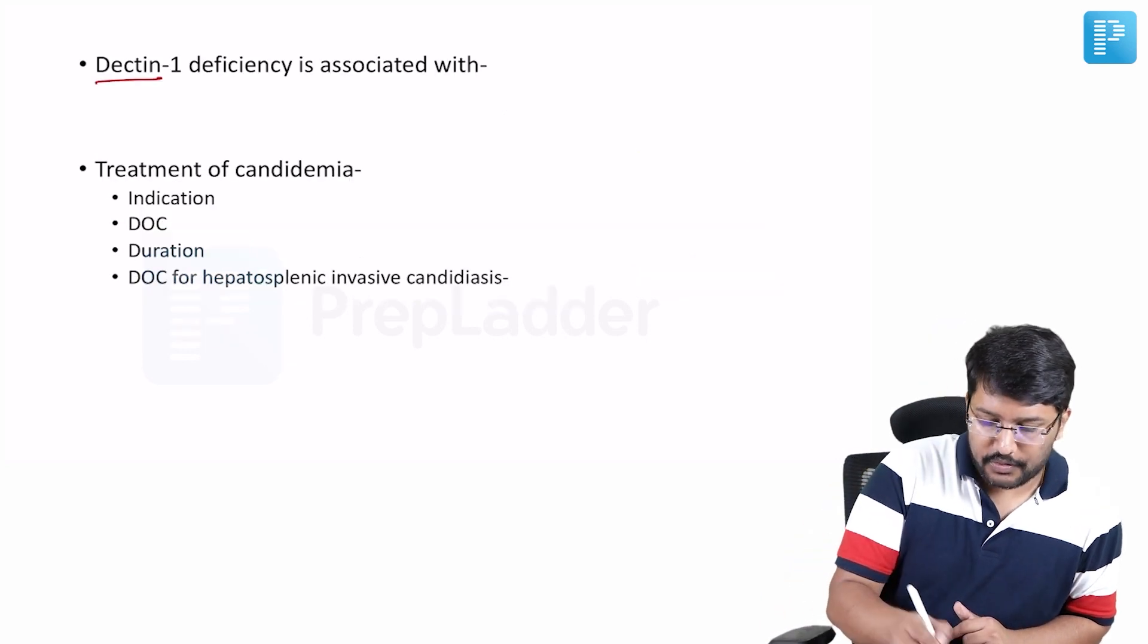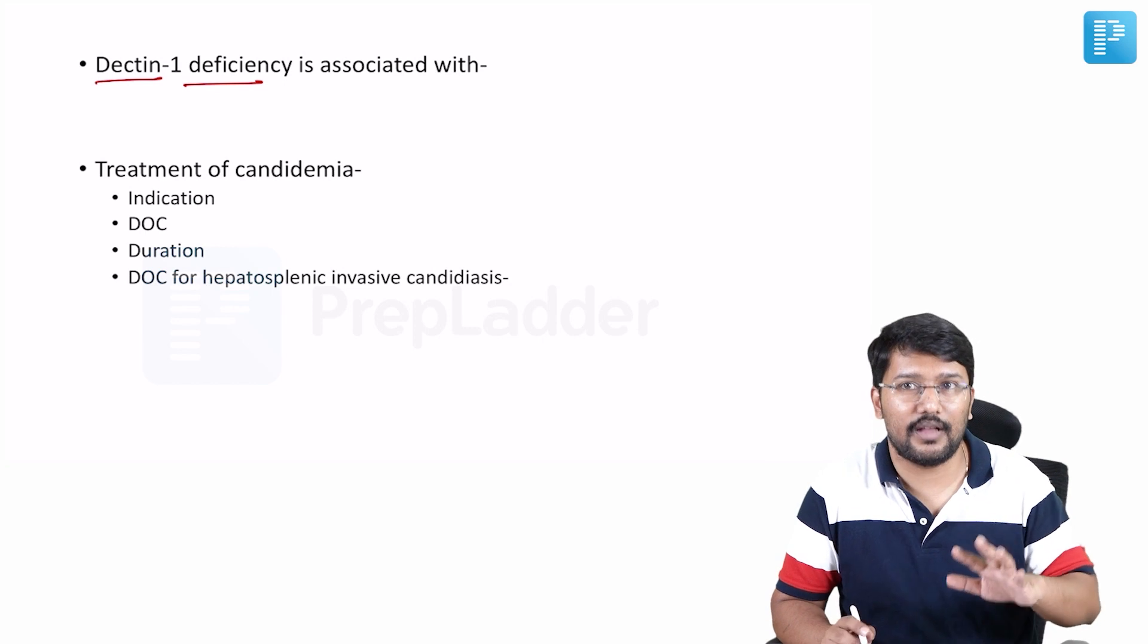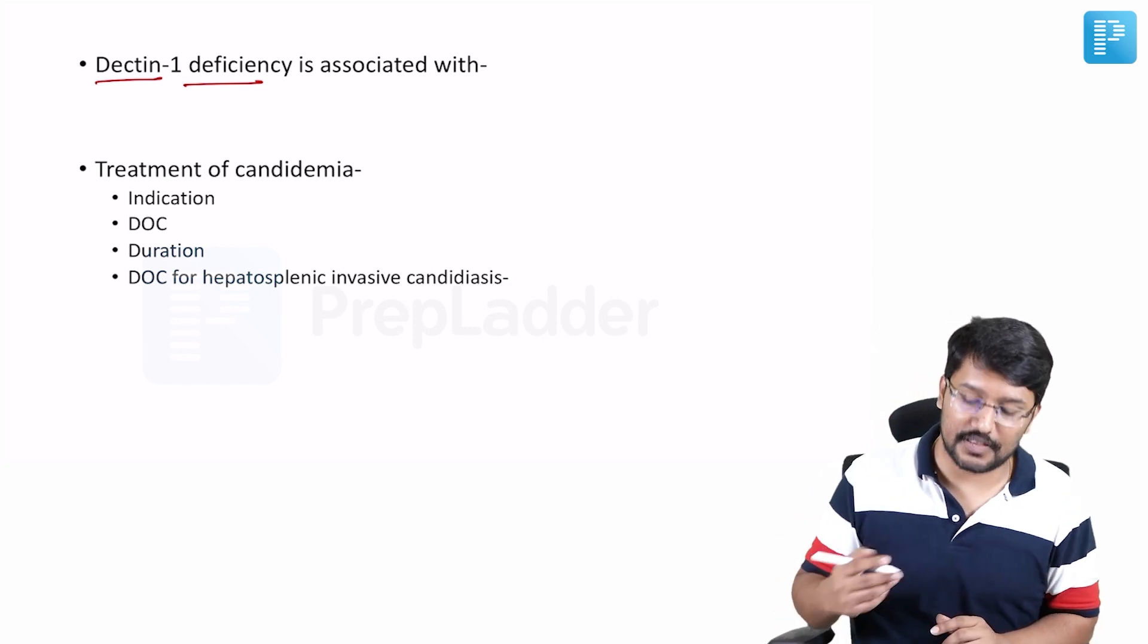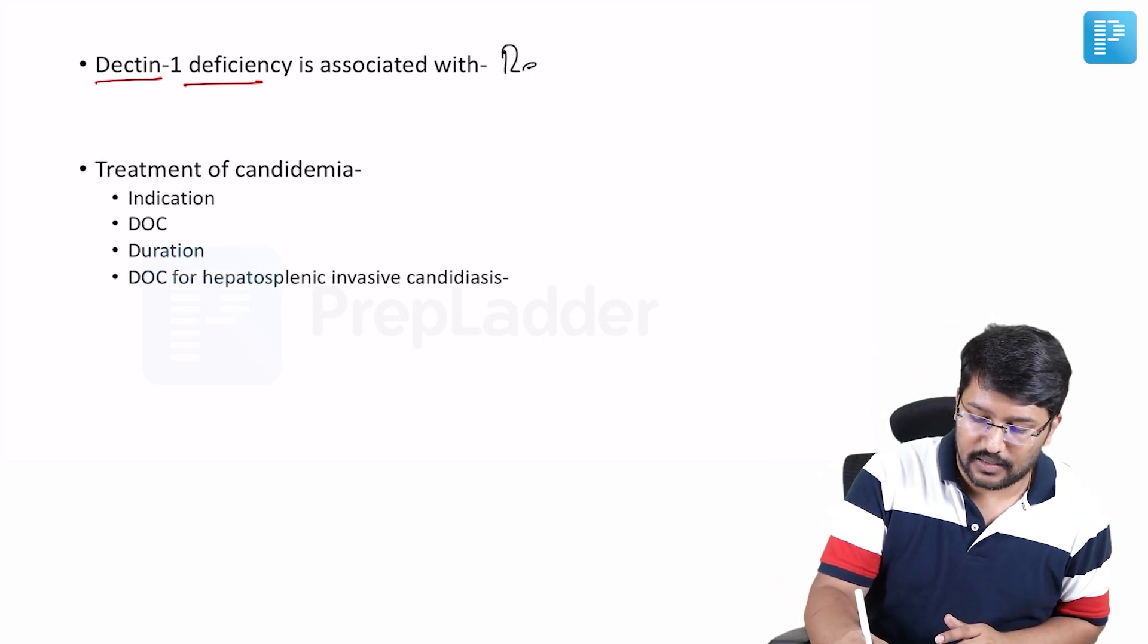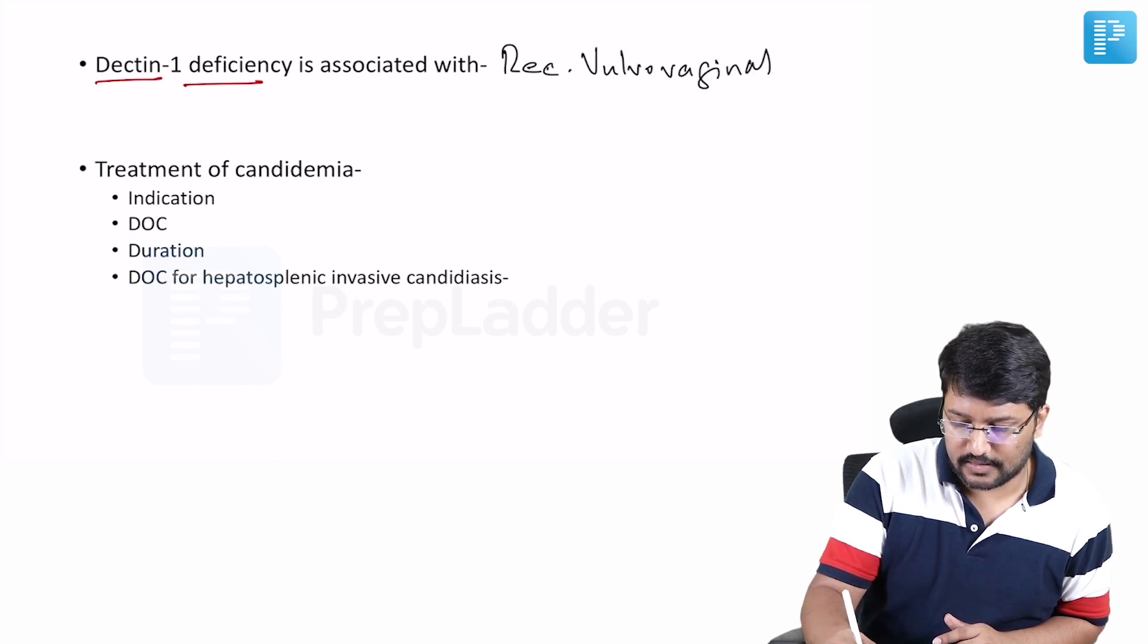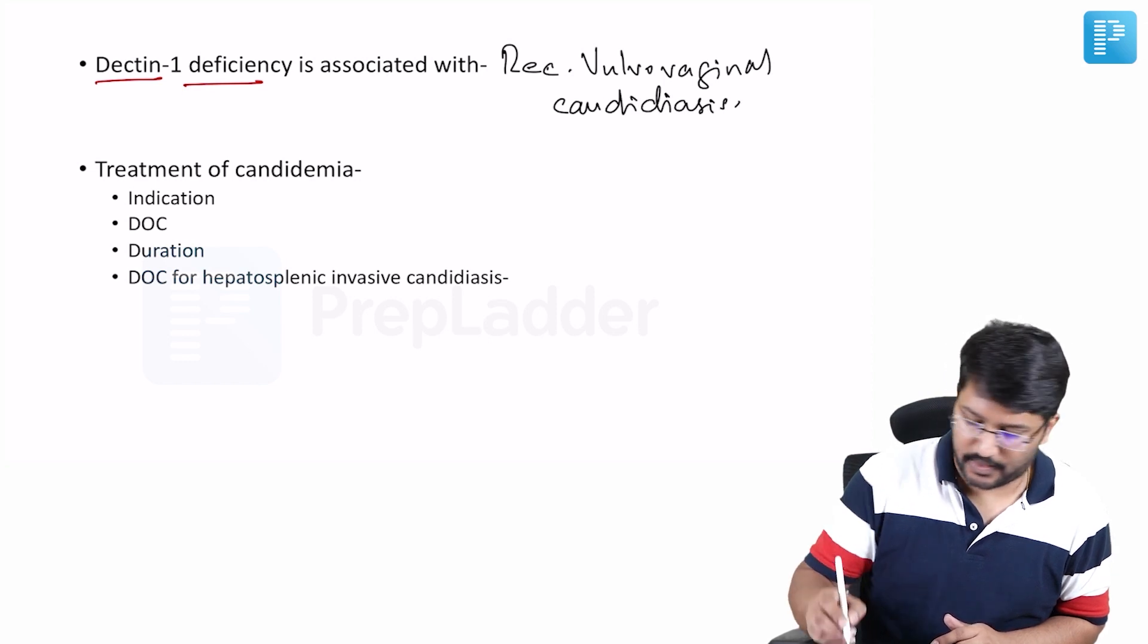Another important point I want you to remember is dectin deficiency. So some people have something called dectin and its deficiency is associated with recurrent vulvovaginal candidiasis. Recurrent vulvovaginal candidiasis.